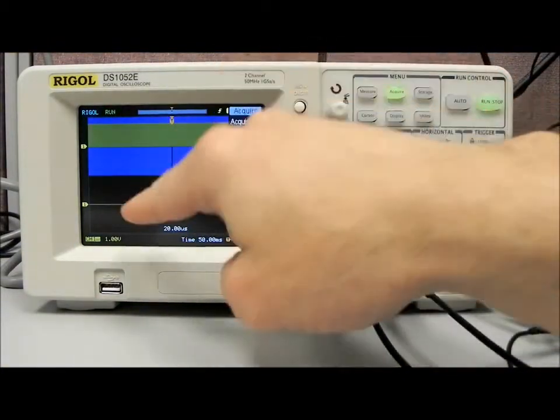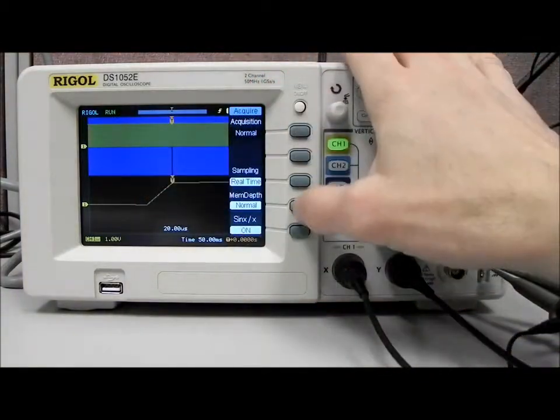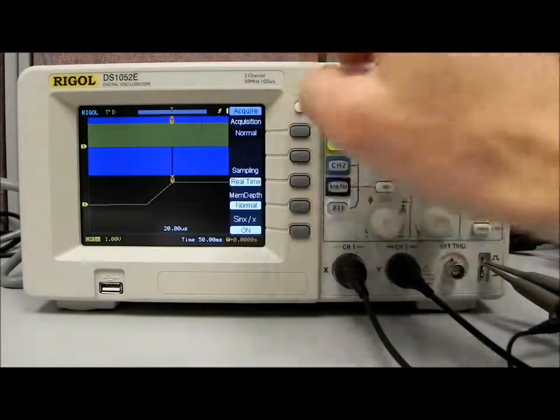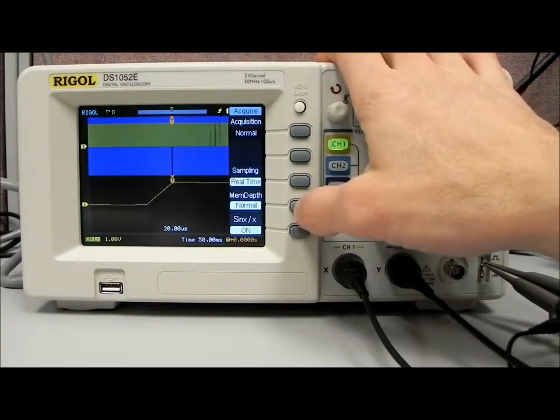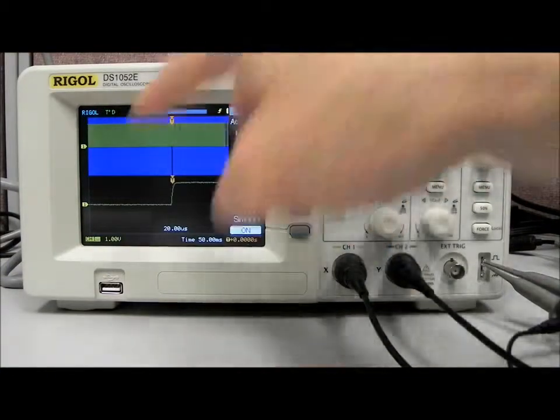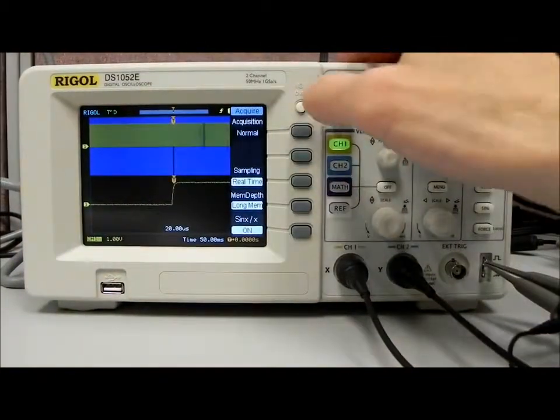So let's go back to normal. As you can see, we don't have very much resolution in normal mode because we're acquiring so many data points over 50 milliseconds, we don't have a lot of resolution. With this particular scope series, we can actually go to long memory that's going to give us a million points, and you can see it fills in that very nicely.